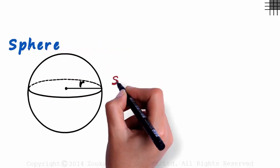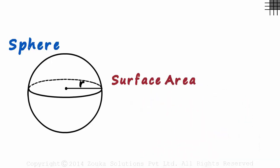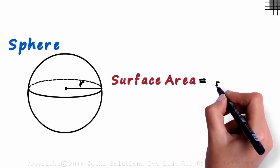How do we define the surface area of the sphere? The surface area of the sphere equals 4πr².